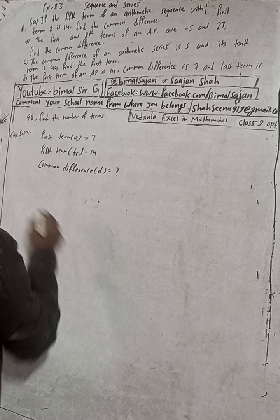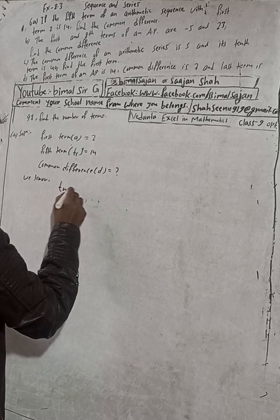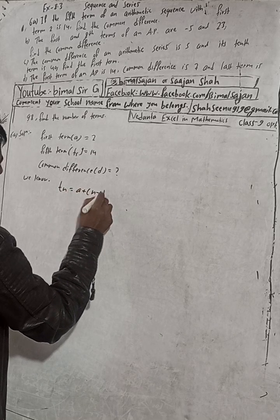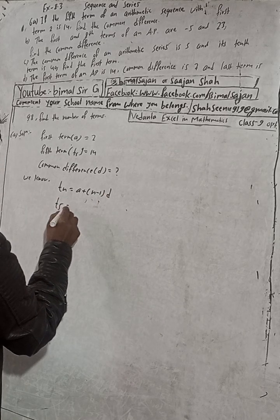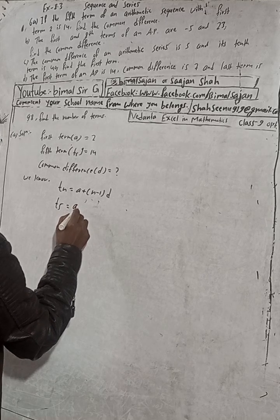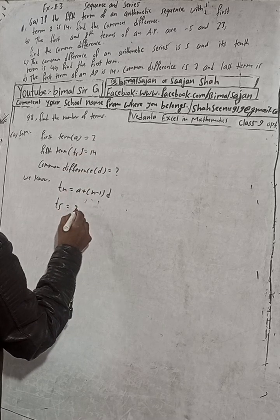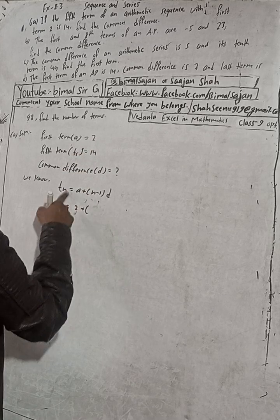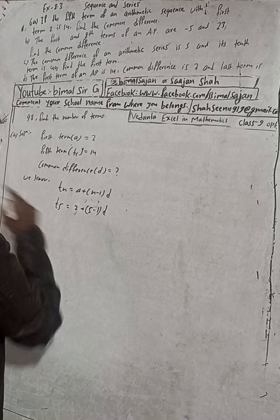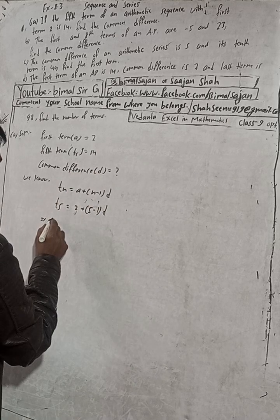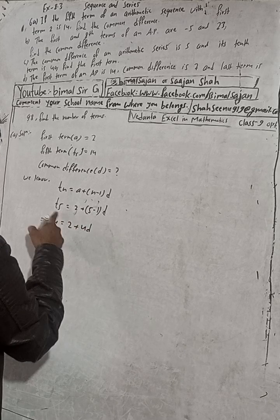We know the formula: Tₙ = a + (n−1)·D. So T₅ = a + (5−1)·D. Substituting a = 2: T₅ = 2 + 4D. Since T₅ is given as 14, we write: 14 = 2 + 4D.